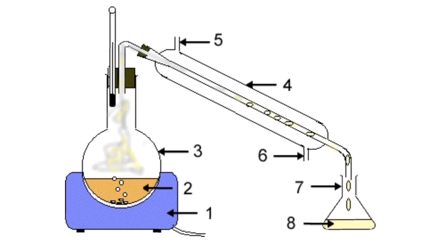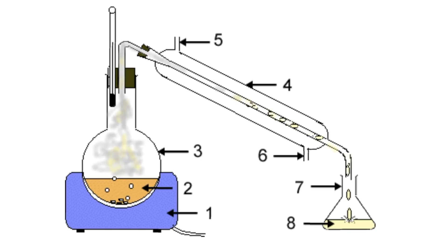Numbers five and six are where the water goes — cold water goes into number five and comes out of number six. It's this cold water that's cooling the vapors down and condensing them. Those vapors are turning into liquid halfway through the condenser, and they come out at the end to flask number seven. Number eight is our distillate.